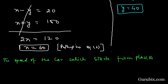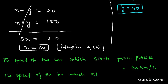This means the speed of the car which starts from place A is 60 kilometers per hour, and the speed of the car which starts from place B is 40 kilometers per hour. This is the solution of the question. Thank you.